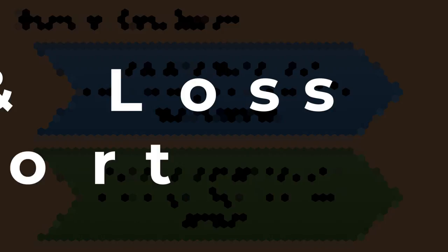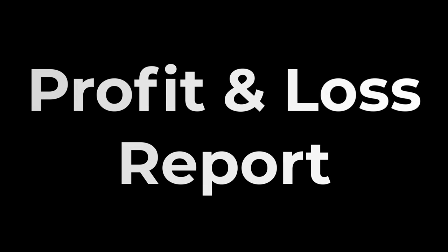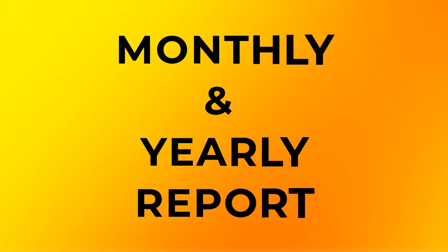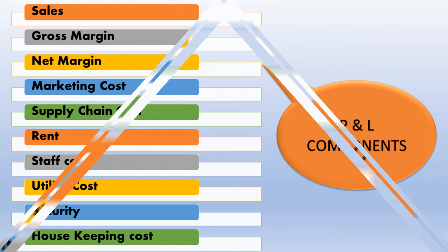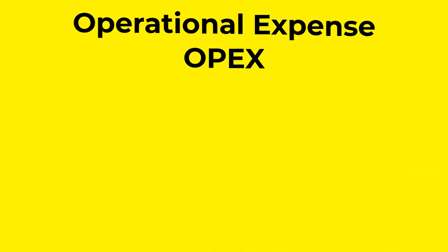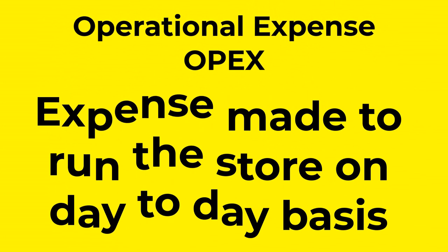The tenth and final report is the profit and loss (P&L) report, one of the most important reports for any retail store. It tells how the business is doing and reveals the profit made by the store for a given period. P&L is a monthly and yearly report. Its components include sales, gross margin, net margin, marketing cost, supply chain cost, rent, staff cost, utility cost, security cost, and housekeeping cost. All these parameters help in understanding the operational expenses required to run the store on a day-to-day basis.